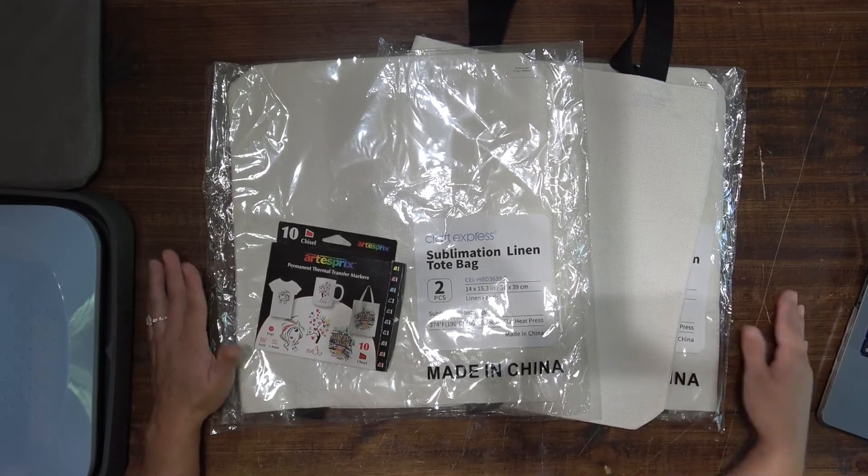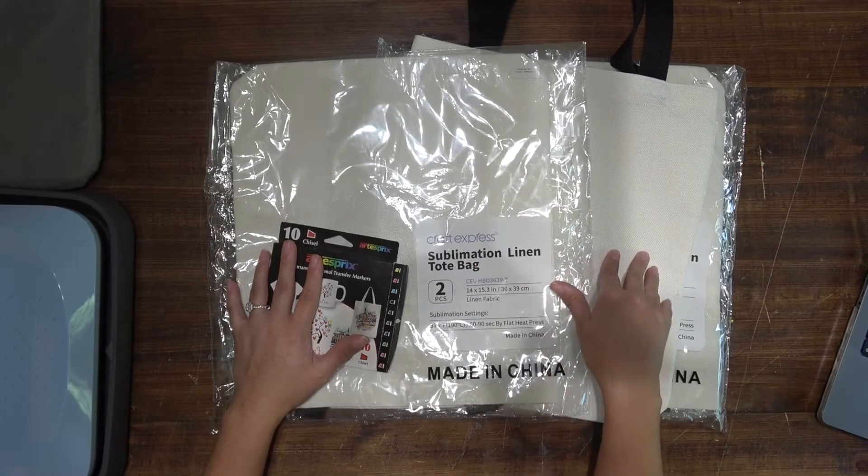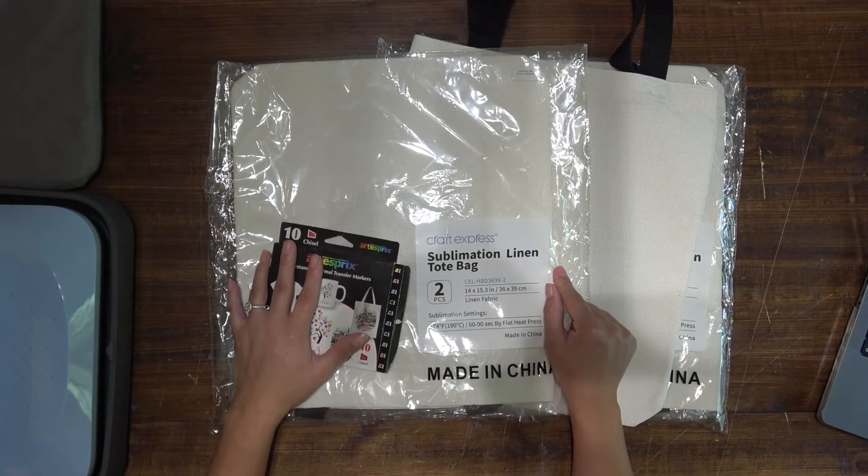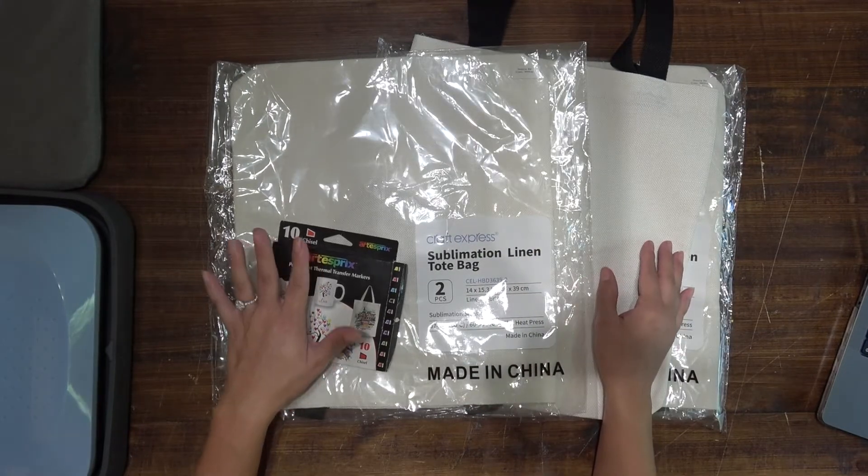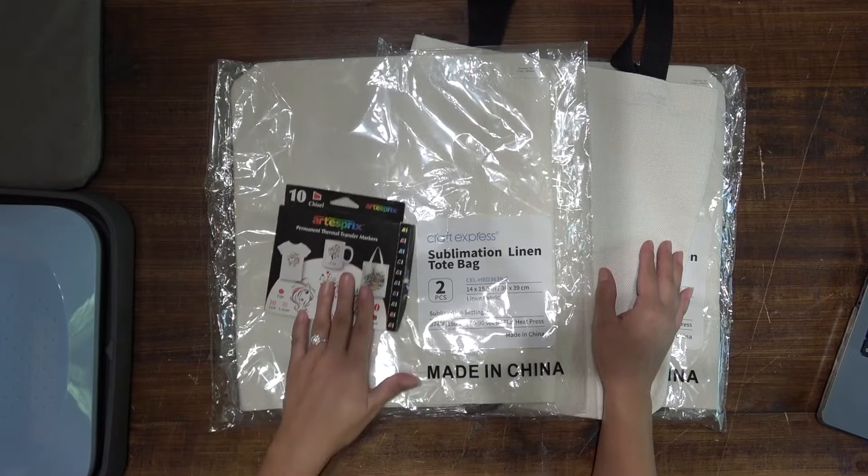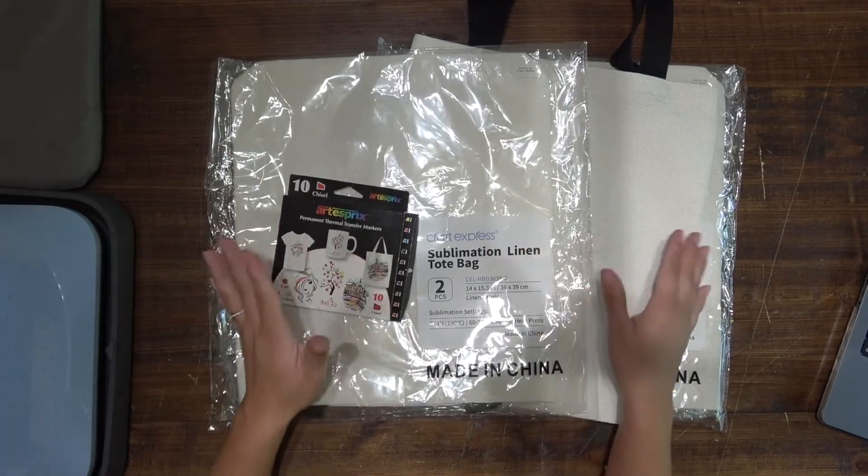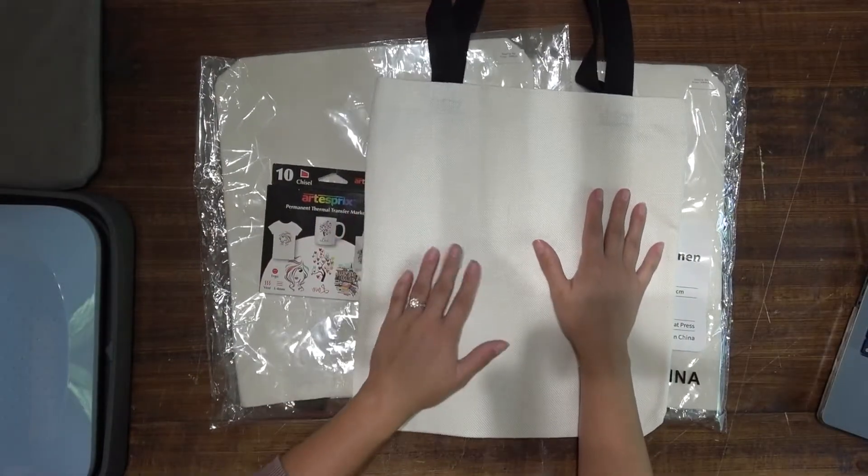Hey y'all, welcome back to the Craft Castle. I am so excited about this little project that I'm going to be working on. It is for my son's fourth grade teacher. I'm just going to make like a basic tote bag for her, but I'm going to use some sublimation markers and a linen bag and I'm going to make a notebook out of this plain white tote.